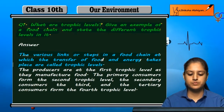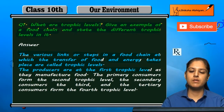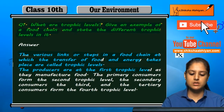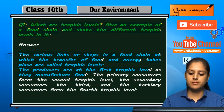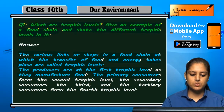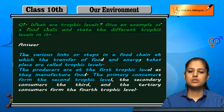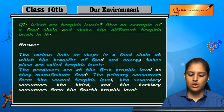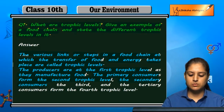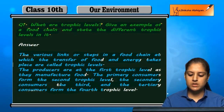The producers are at the first trophic level, because they manufacture food. The primary consumers form the second level. The third level is secondary consumers, and then there are tertiary consumers.